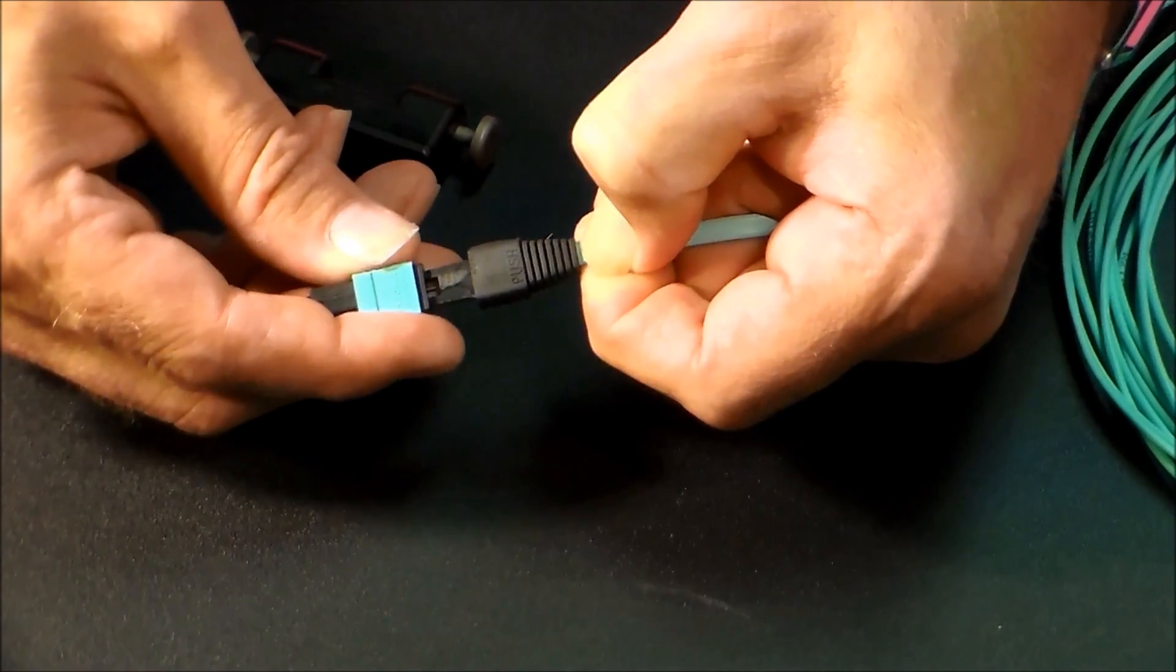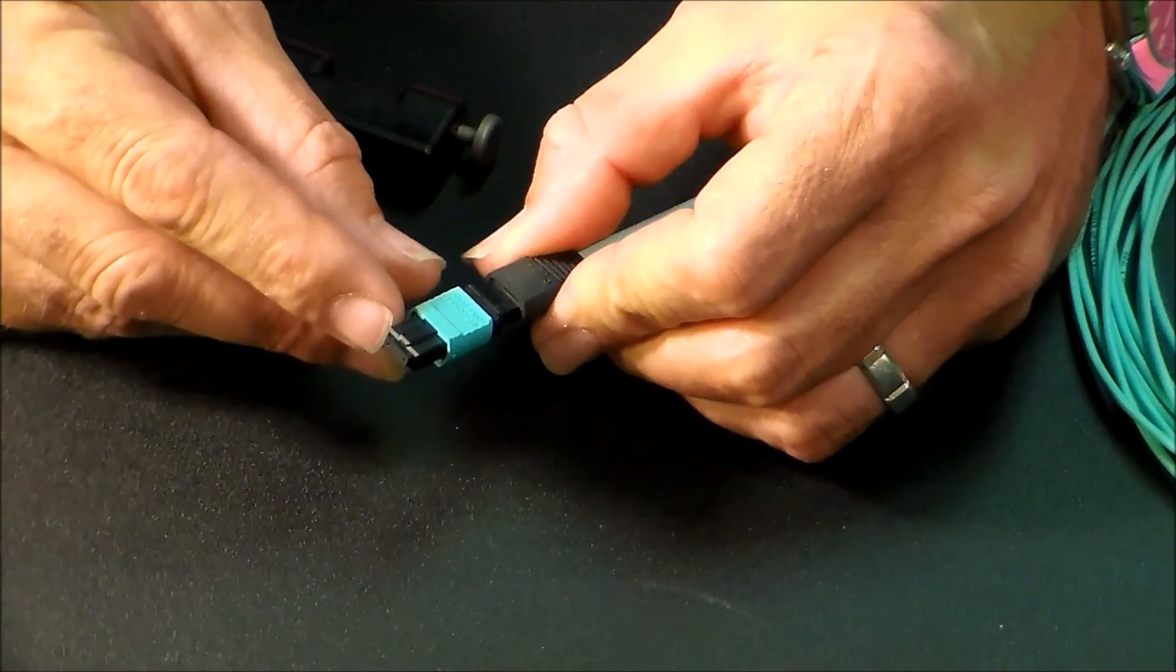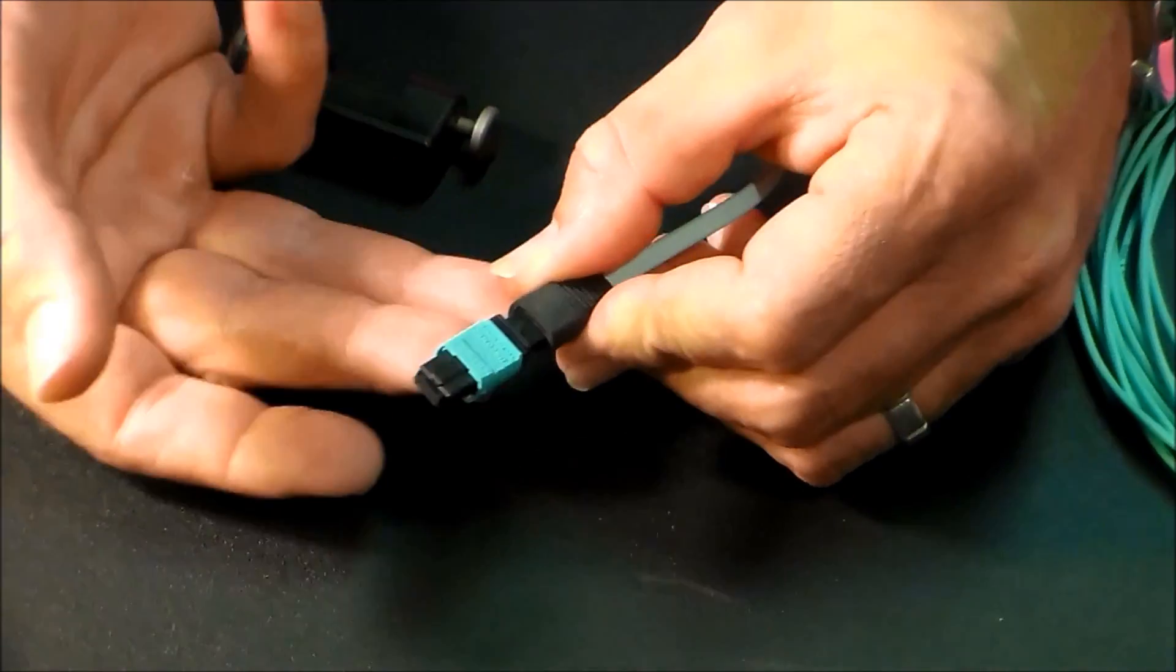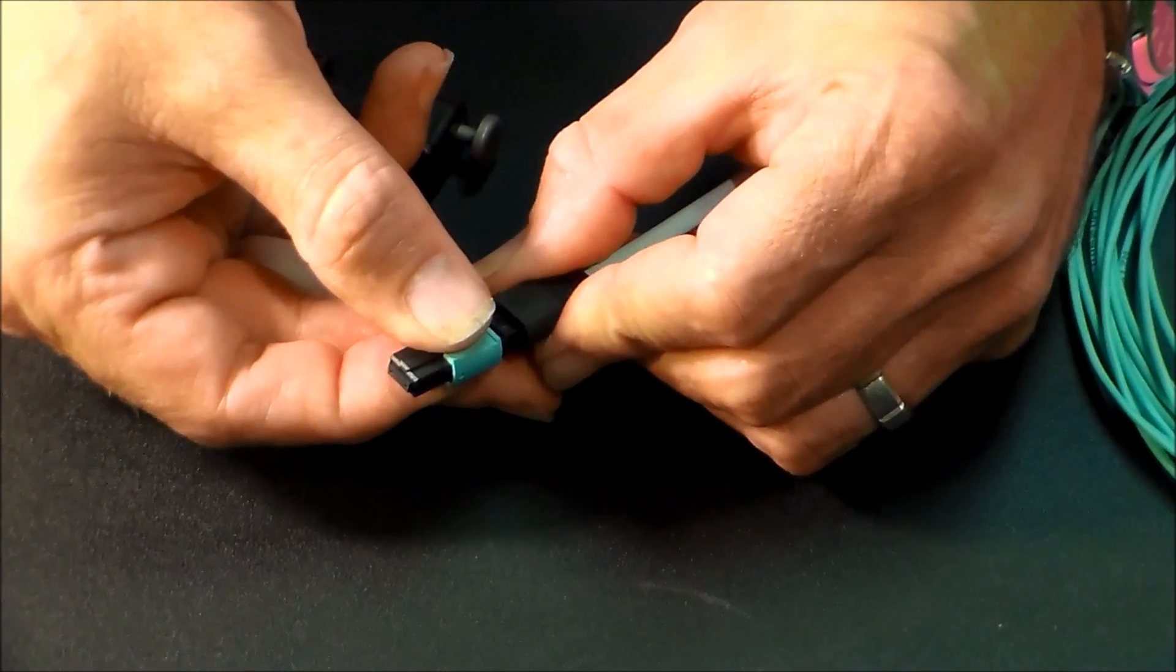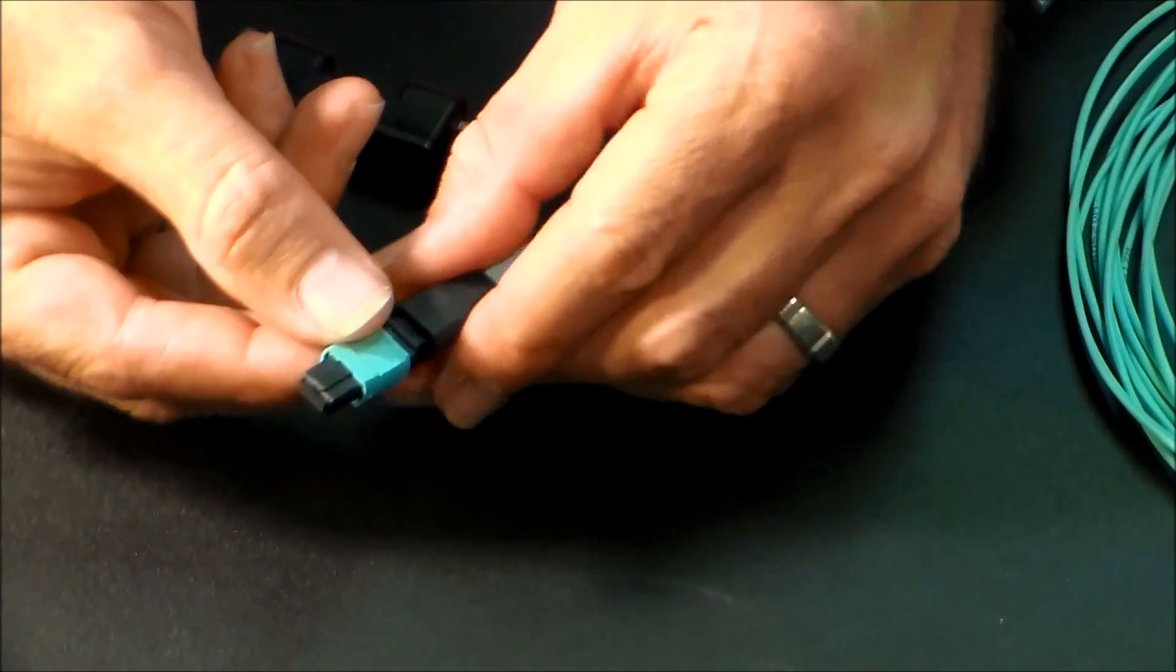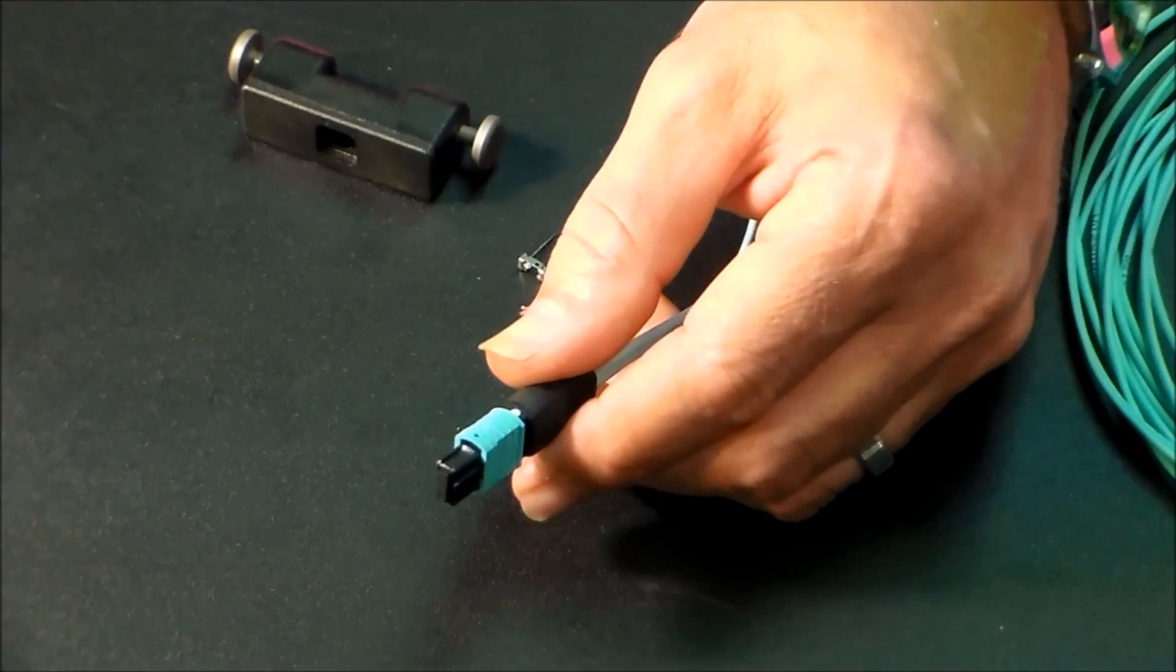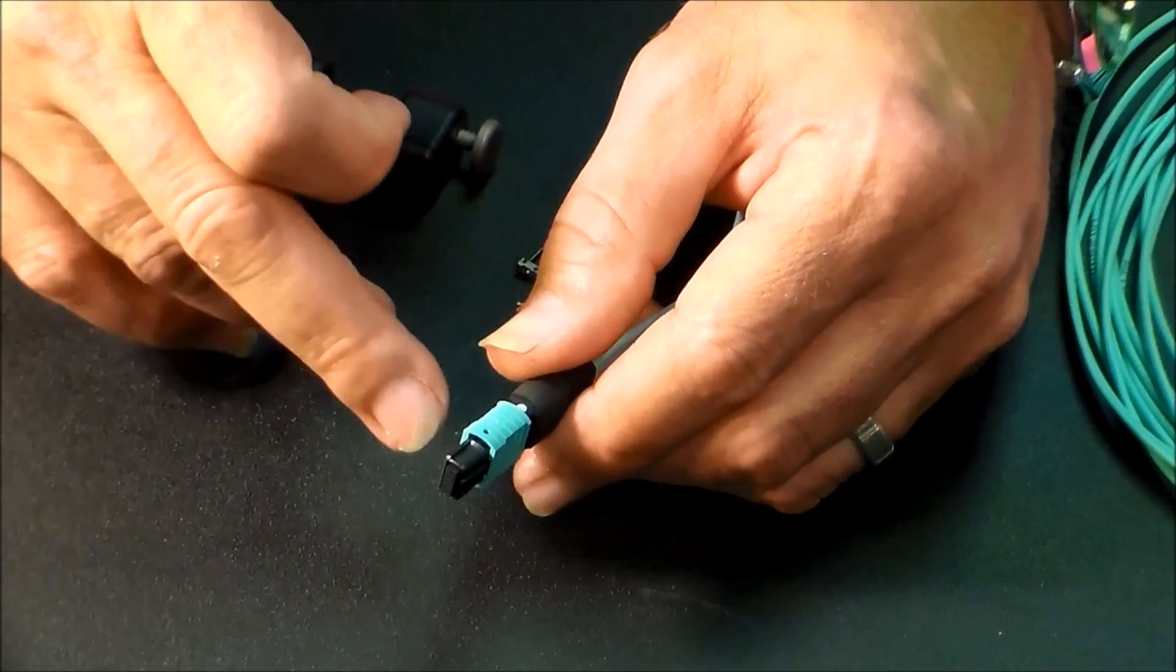Now I can let go of the back. I can see the ferrule is already sticking out the front, and I haven't even snapped it together yet. Now as I push it, it's going to slide that ribbon back into the jacket. And there it is. So now I've converted it from a male to a female.